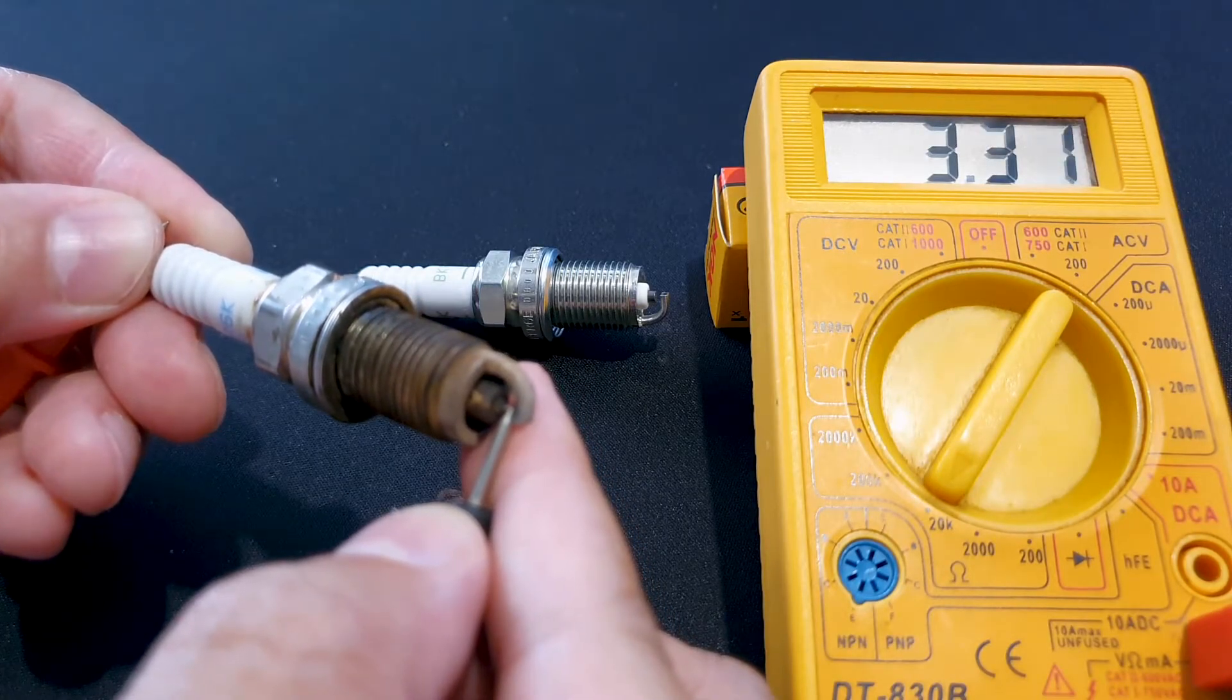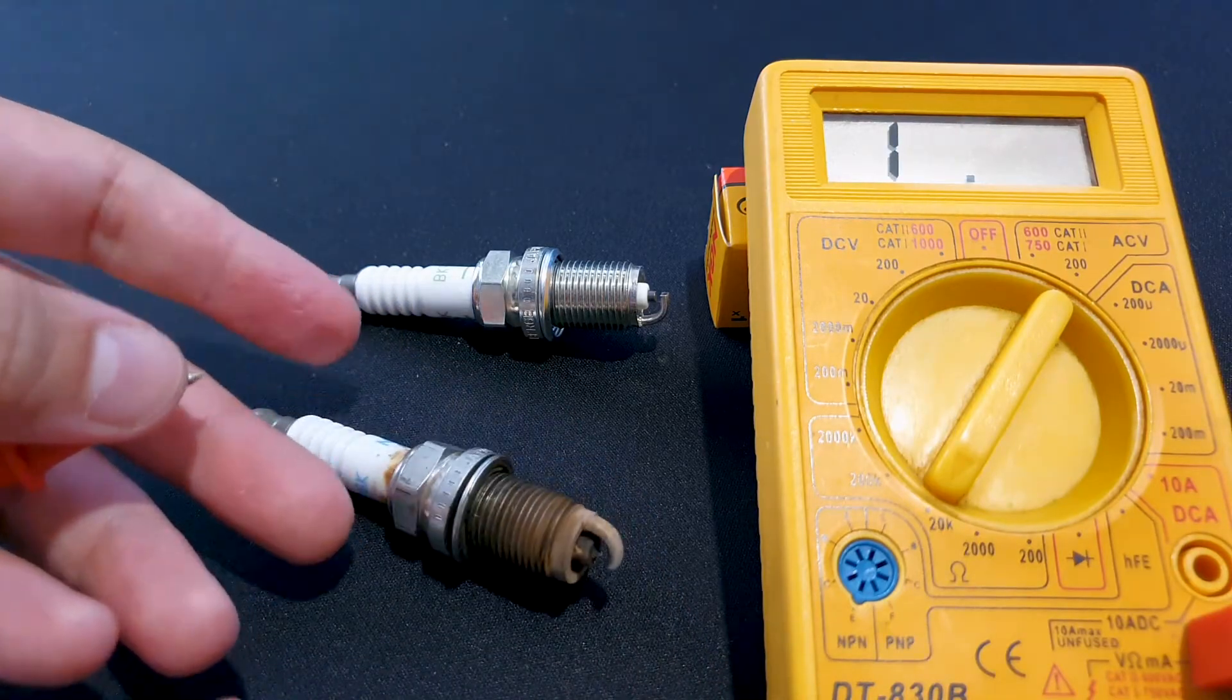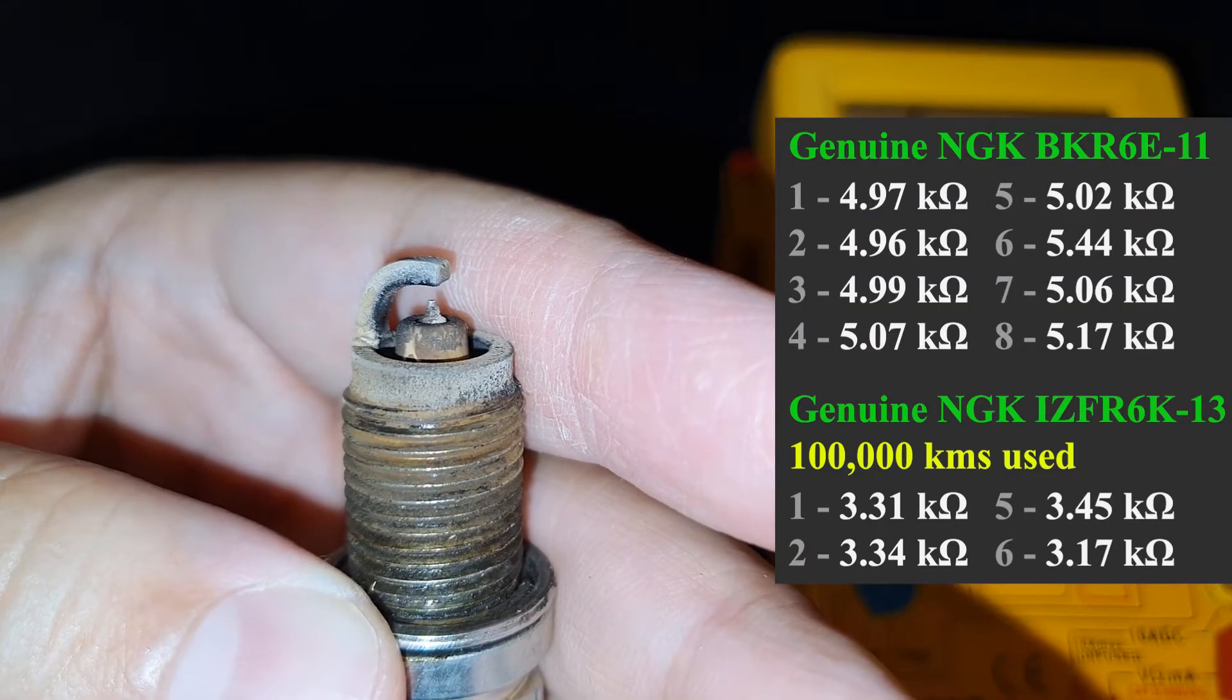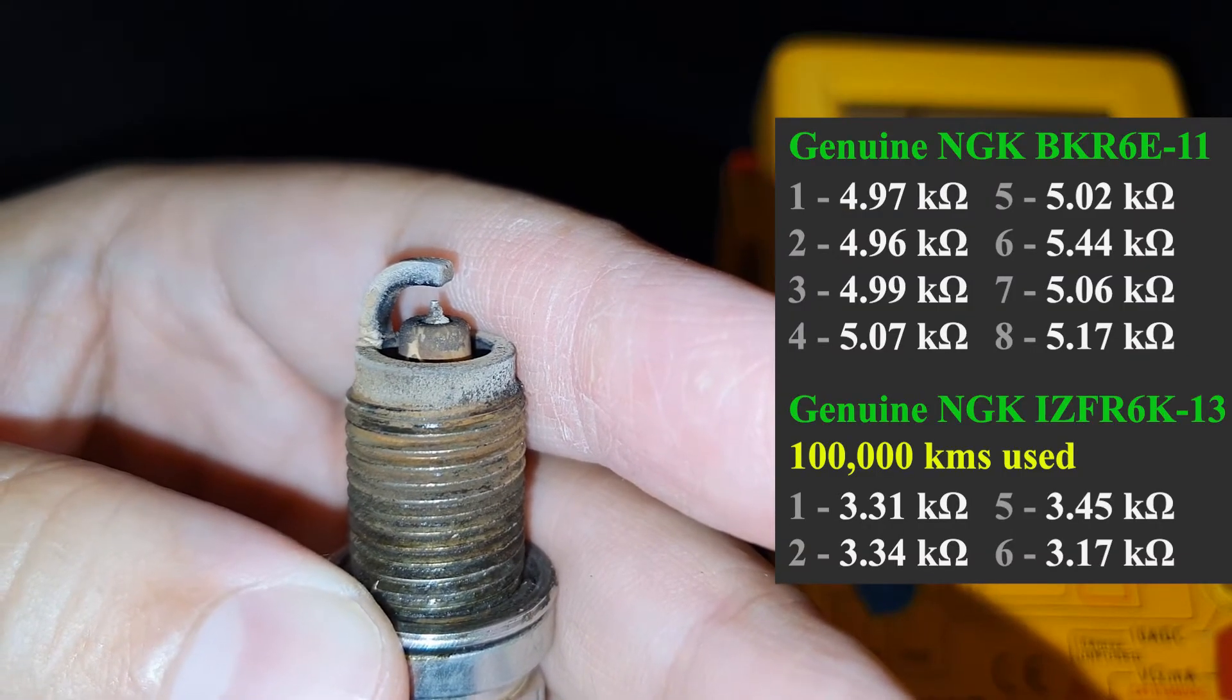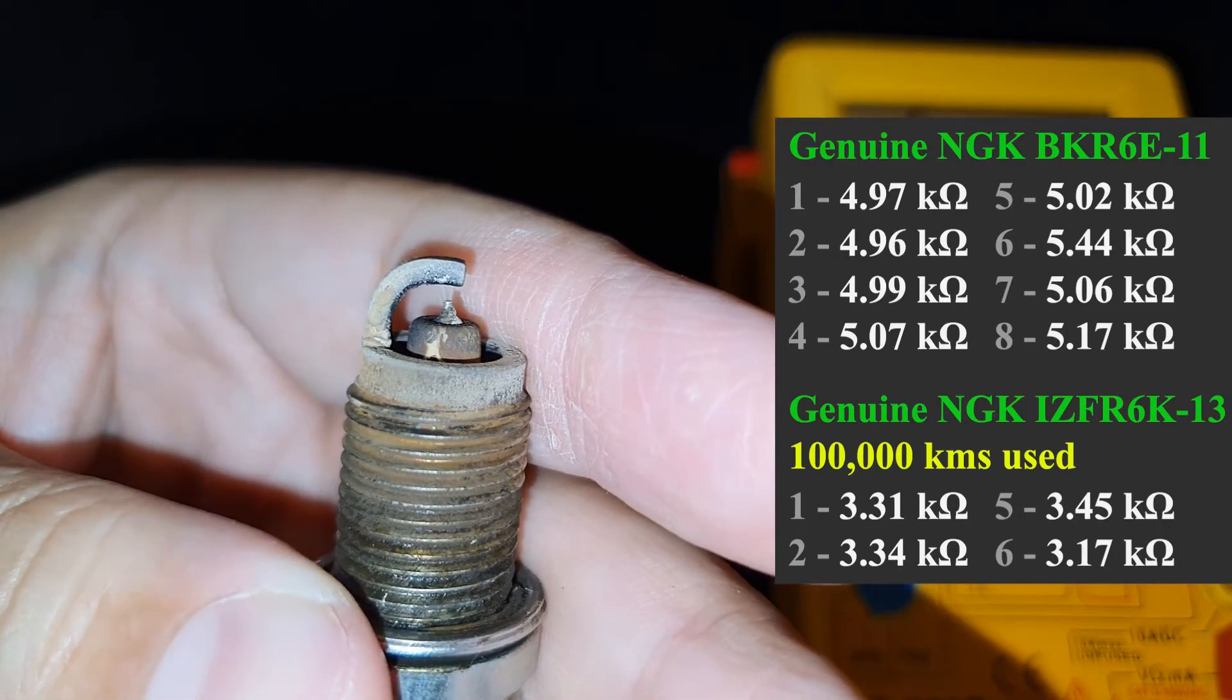3.31. I'll check the other three plugs and show that on the screen. Okay, all done. I know these plugs are genuine and the results show all readings are between 3,300 and 3,500 ohms.